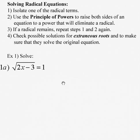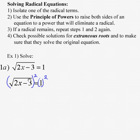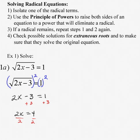In this case the radical is already isolated, so step one is done. To undo square roots we're going to square both sides — that's step two. When you square a square root, that leaves us with the radicand, which is 2x minus 3. And 1 squared is equal to 1. So add 3 to both sides: 2x equals 4. Divide both sides by 2, and x is equal to 2.